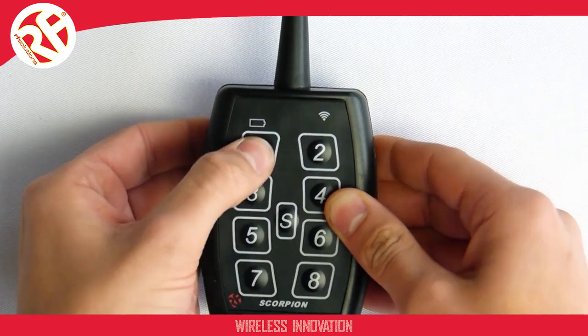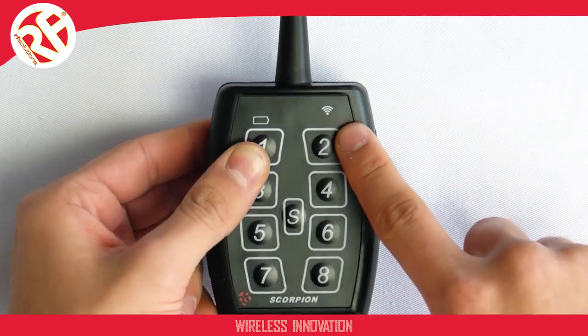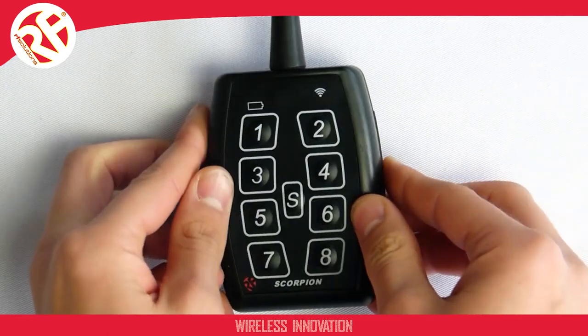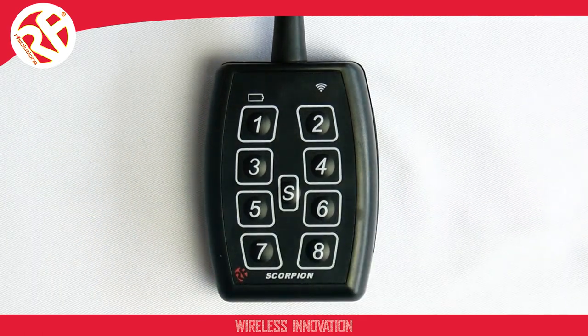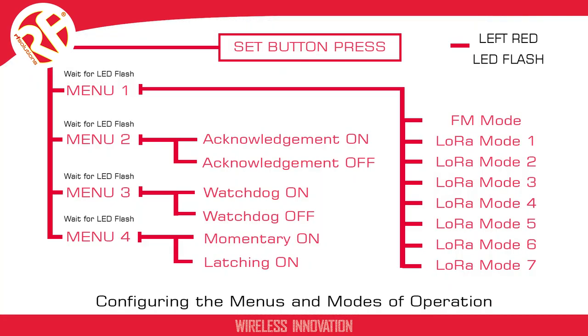And that's it — alternating between continuous and state change modes on the Scorpion transmitter. For more information on our Scorpion transmitters check out our other videos on our YouTube channel, or alternatively check the datasheet.